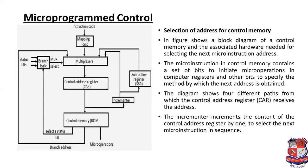The diagram shows two different paths from which the control address register receives the address. The next micro instruction is determined through the multiplexer, which connects mapping logic and branch logic along with the subroutine register. The incrementer increments the content of the control address register by one to select the next micro operation in a sequence.